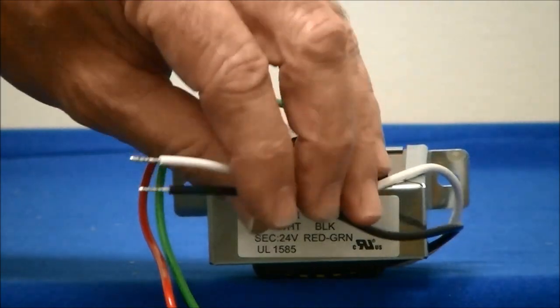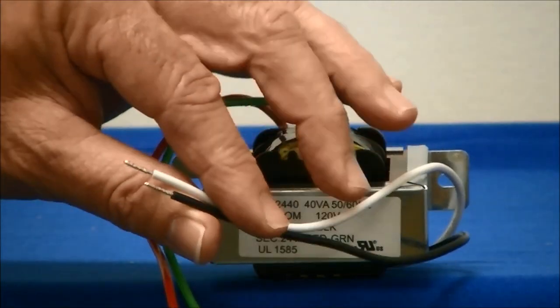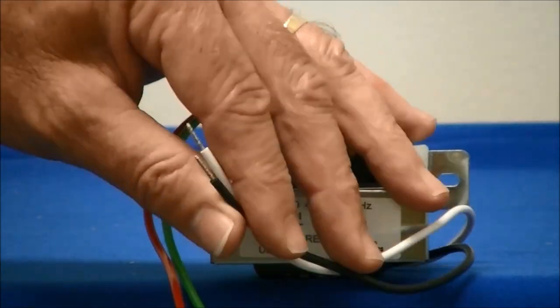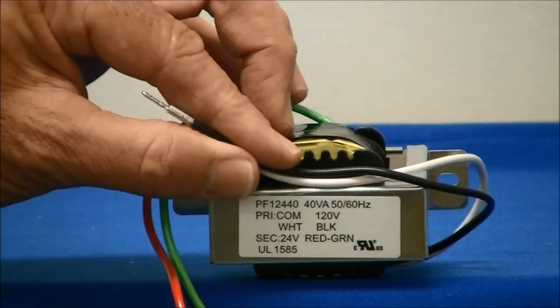The primary voltage leads, the primary coil, is what goes to the power source, the source of power coming out of the wall to energize this transformer.